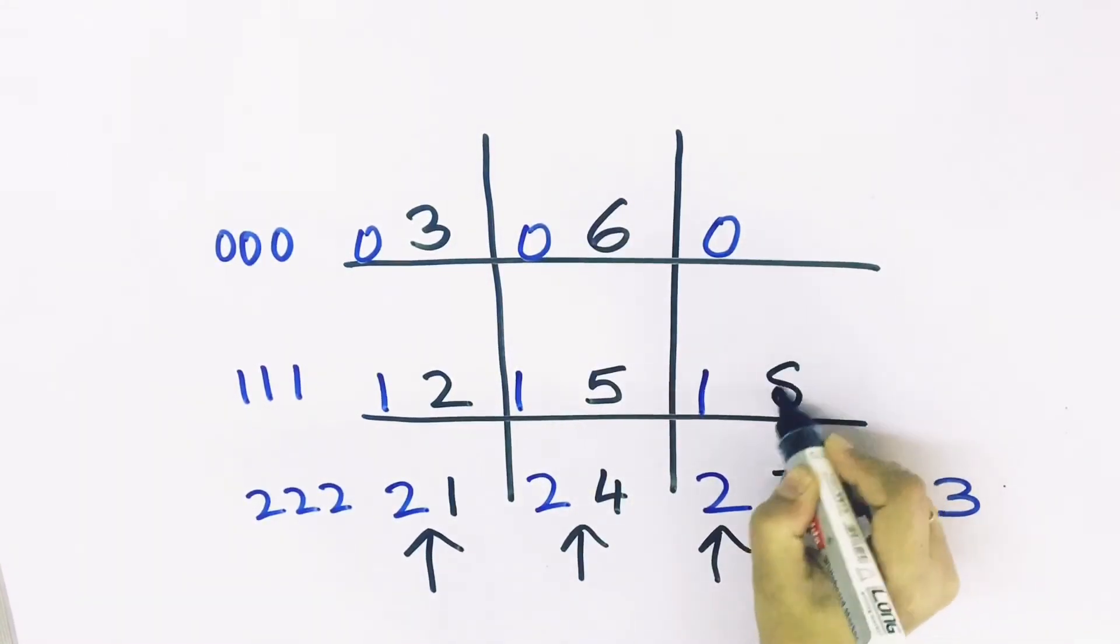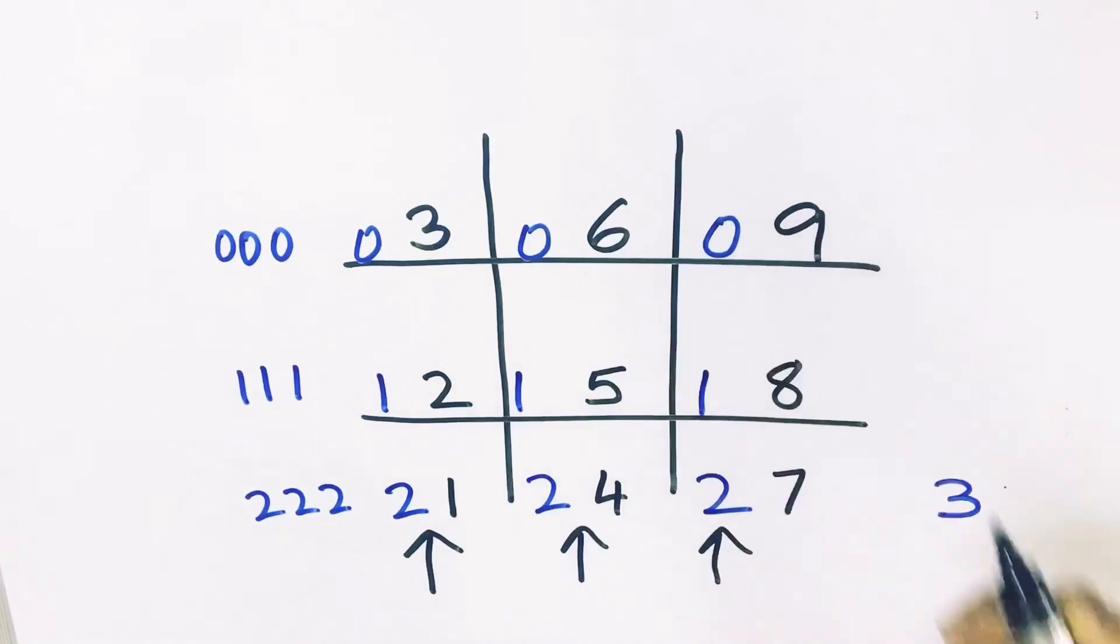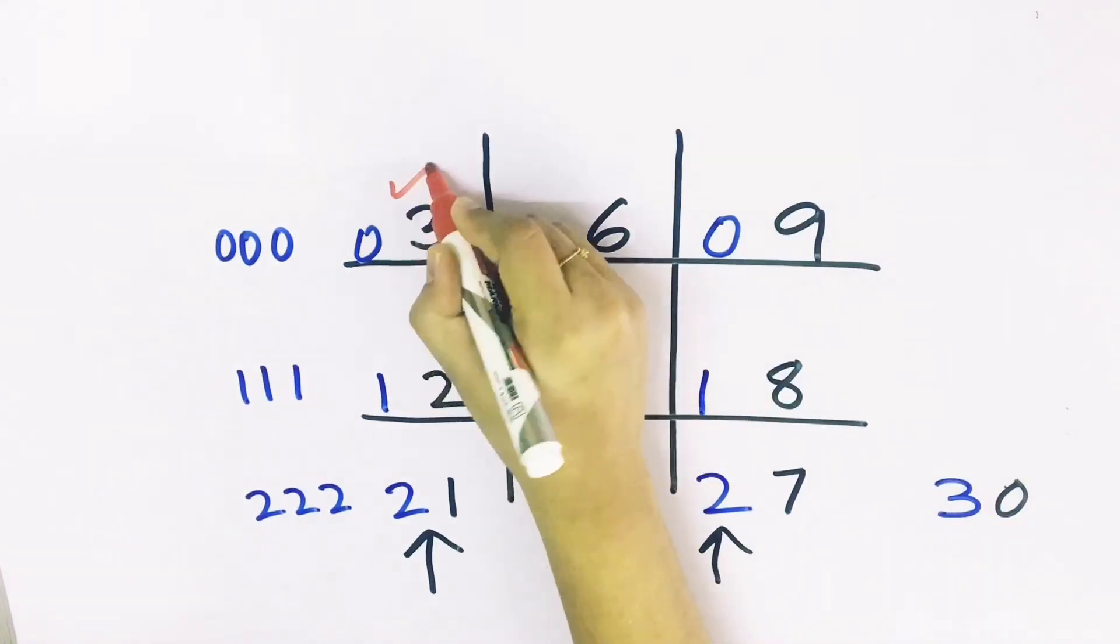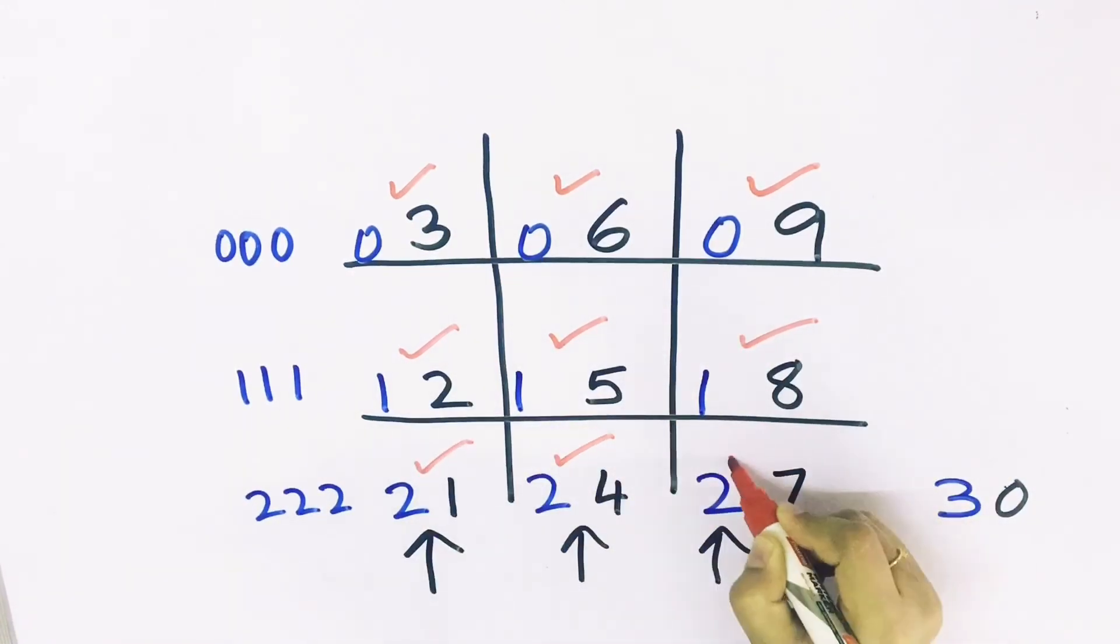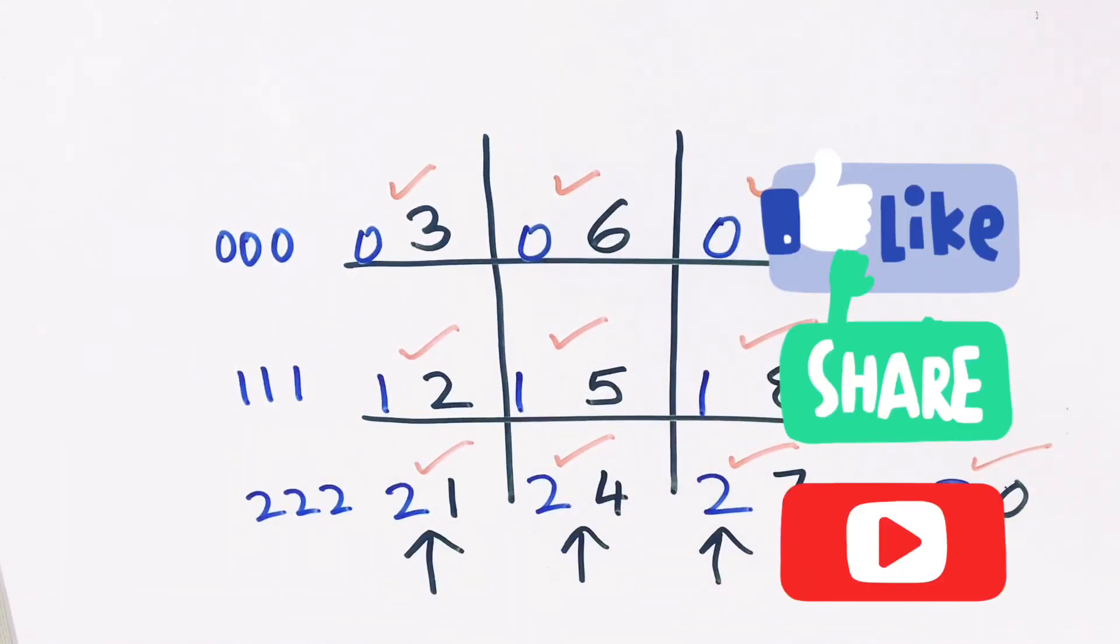So this is my three table: three, six, nine, twelve, fifteen, eighteen, twenty-one, twenty-four, twenty-seven, thirty. I hope you like my video. Do subscribe to my channel. Thank you.